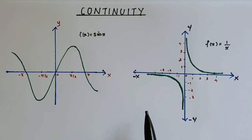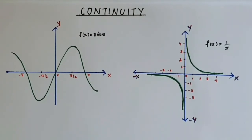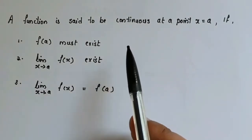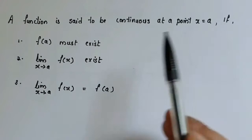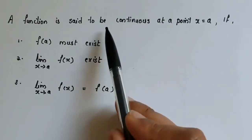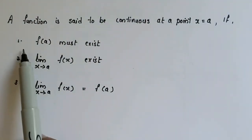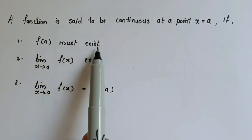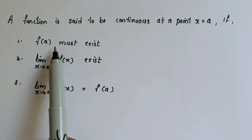This is not a proper definition of continuity, but it is a simple way to help you understand how a function is said to be continuous. In mathematics, a function is said to be continuous at a point x equal to a if it satisfies the following three conditions. The first condition is that f of a must exist — that is, there should be a finite value for f of a.